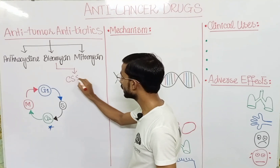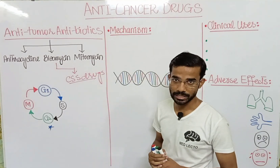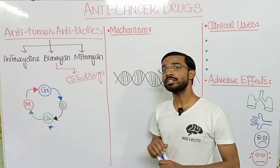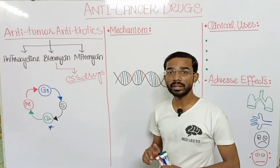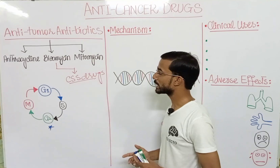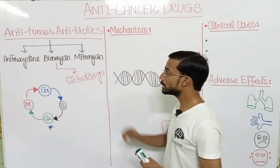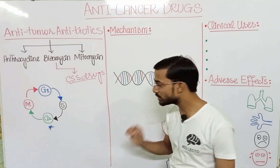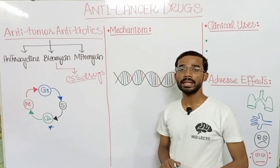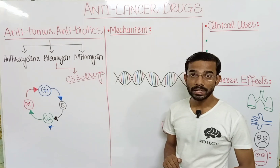Bleomycin is a cell cycle specific drug, meaning it will act only when the cell is in the dividing phase. In anti-tumor drugs, our main focus is on the blockage of cell division or destruction of the cell. The four phases of the cell cycle are G1, S, G2, and M phase, but bleomycin acts specifically in the G2 phase. Another important thing about bleomycin is that it is a chelator of different ions like copper and iron.